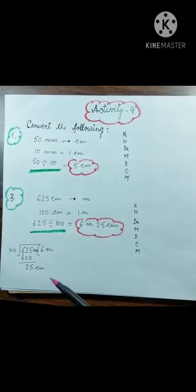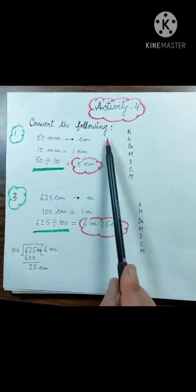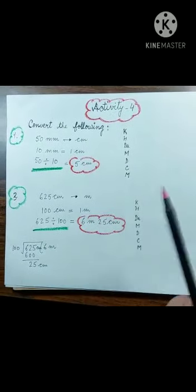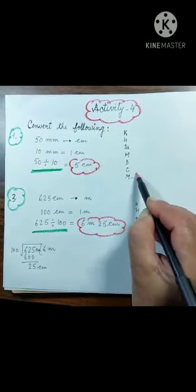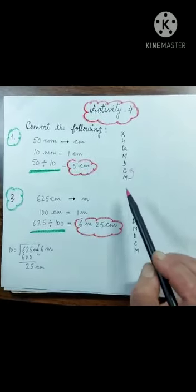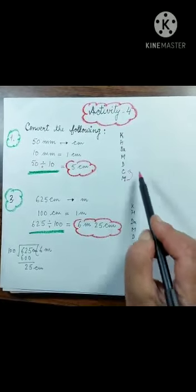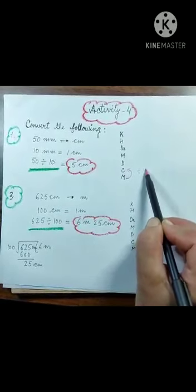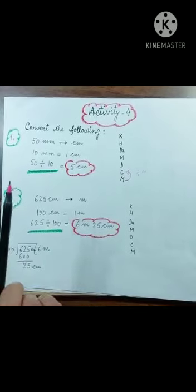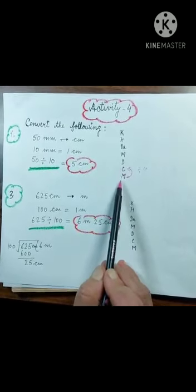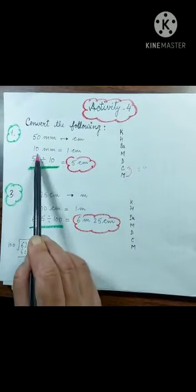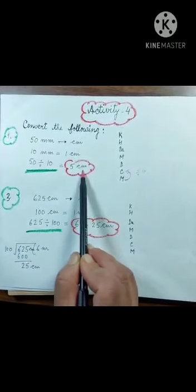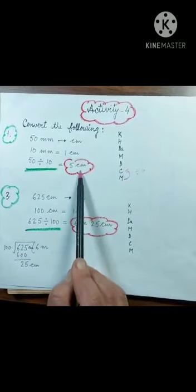Now a few sums of activity 4 — convert the following. First: 50 millimeters convert to centimeters. Millimeters are given, going to centimeter — smaller to bigger, so divide. One step taken, divide by 10. One centimeter equals ten millimeters, so 10 millimeters equals 1 centimeter. Divide 50 by 10 equals 5 centimeters. So 50 millimeters equals 5 centimeters.